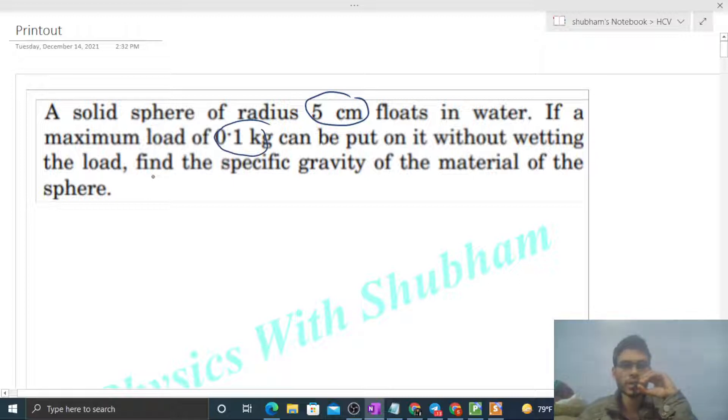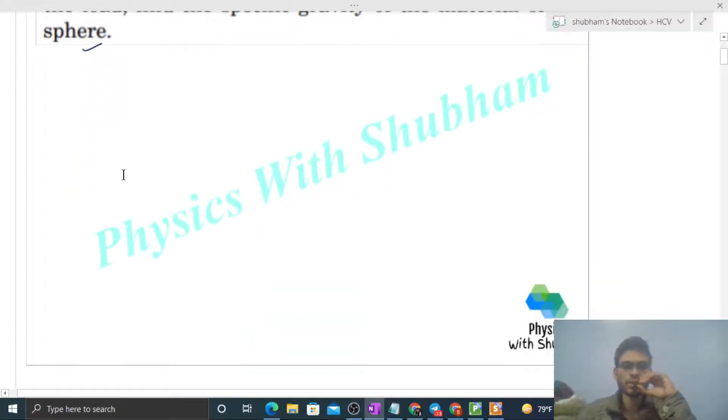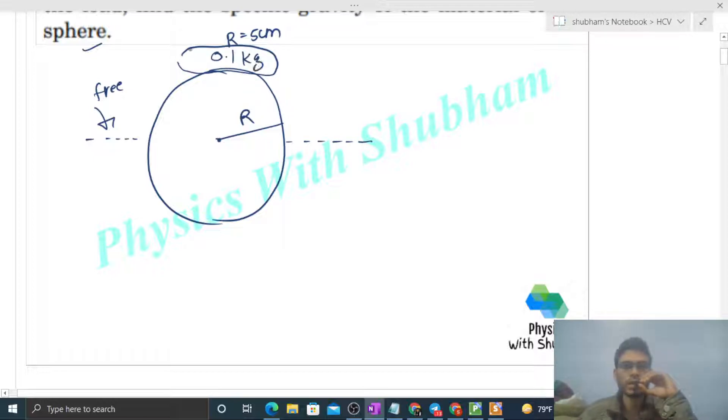So let's see. We have a solid sphere, radius capital R, radius is given 5 centimeter. And this solid sphere floats on the surface of water. This is the free surface of water. Now what happens is we put a load whose mass is 0.1 kilogram on the top of this sphere.